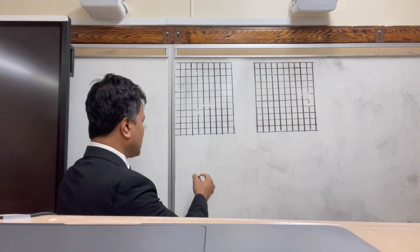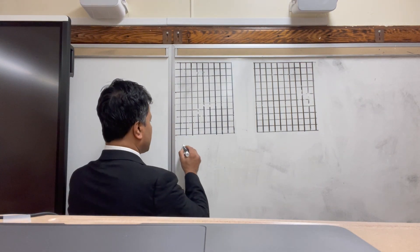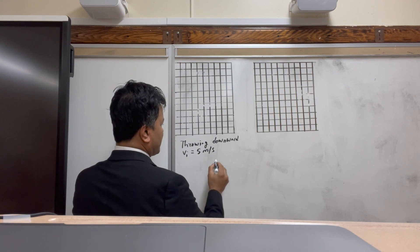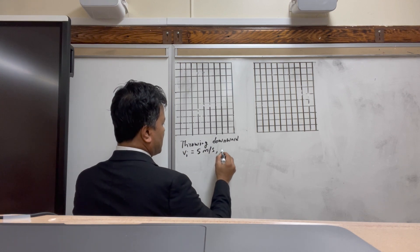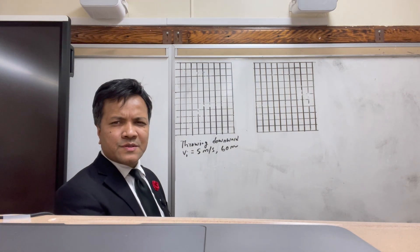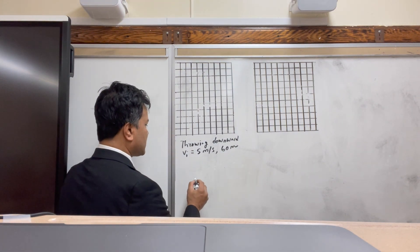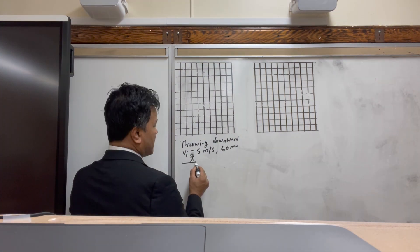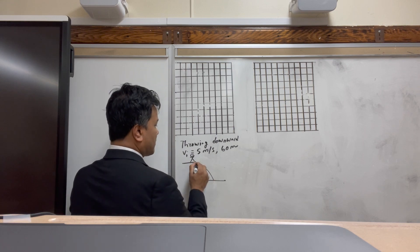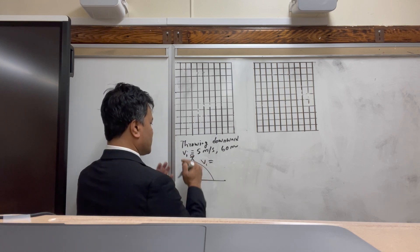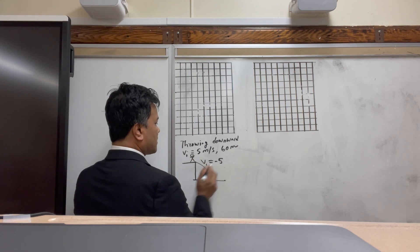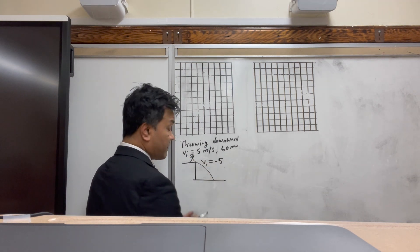The last problem: throwing downward at 5 meters per second from a 60-meter tall building. First, draw a v-t graph. Since you're throwing it downward, the initial velocity has to be negative 5.